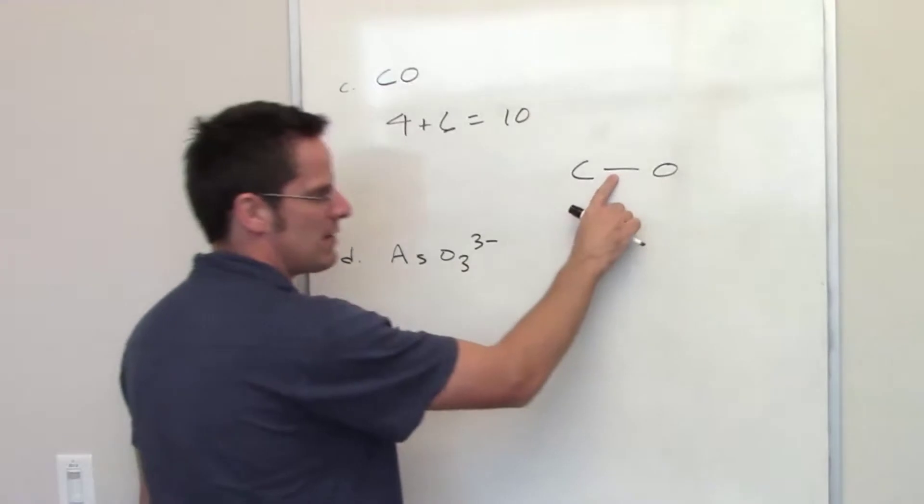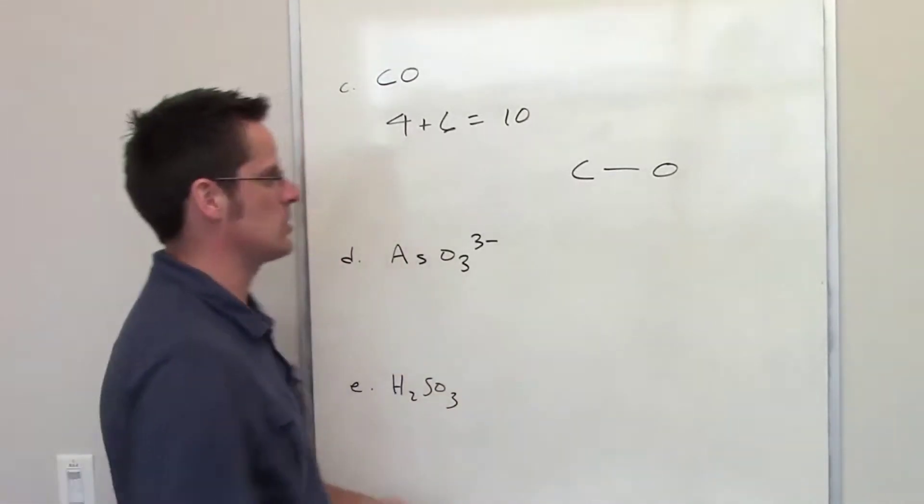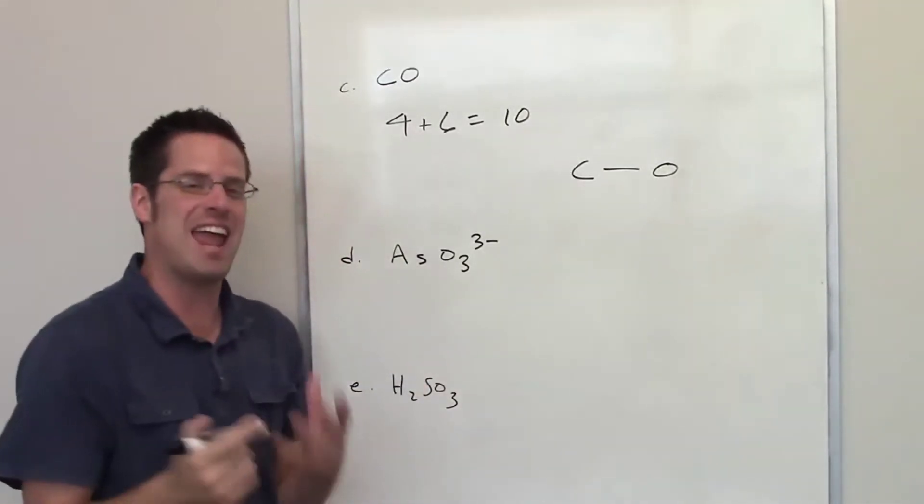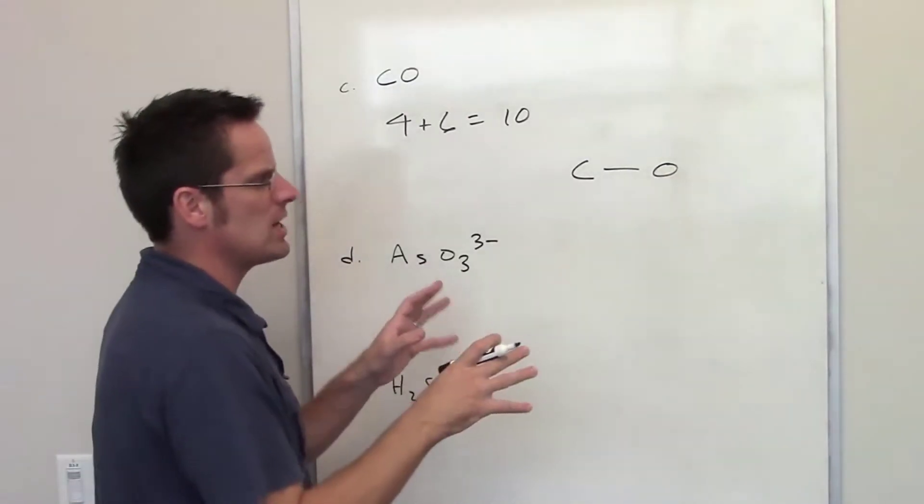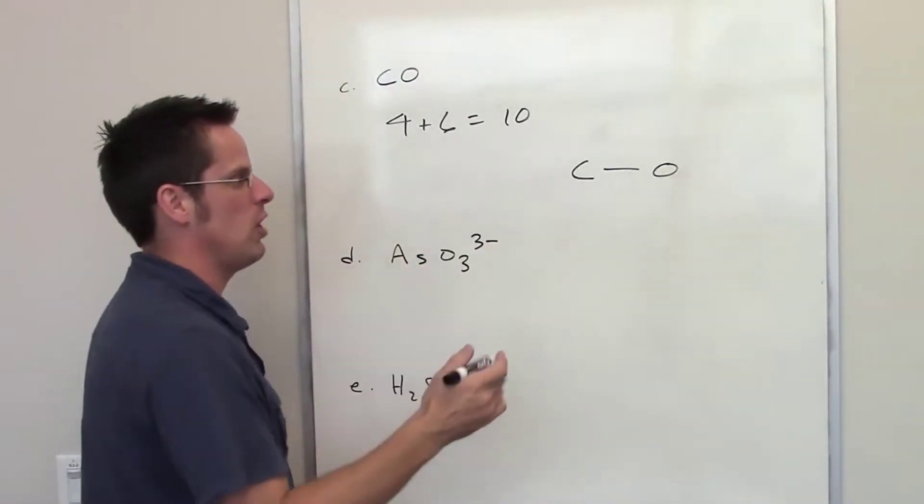Remember that every time you draw a straight line, that represents two electrons. So I've already used two. I have eight left. So what I'm going to try and do is throw those eight down and see if I can give everyone a full octet.